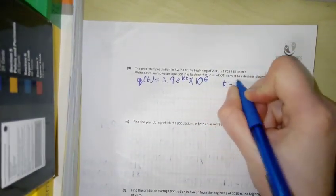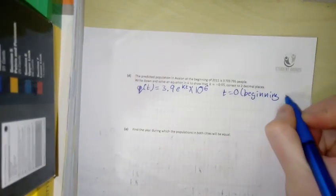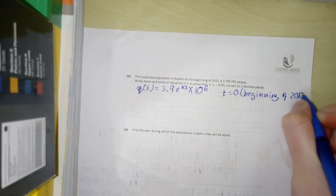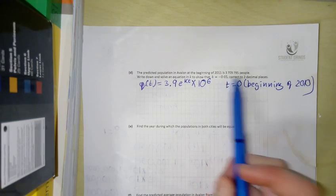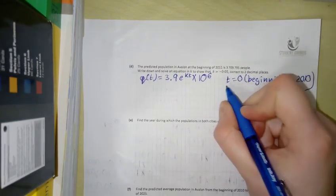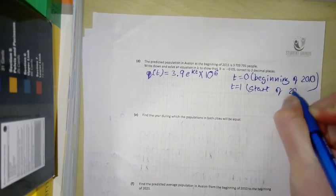And T equals 0 is beginning of 2010. So at the beginning of 2011, T is going to be equal to 1. So T equals 1, start of 2011.